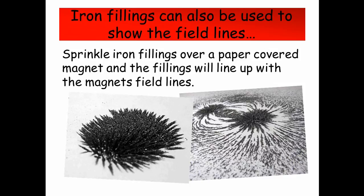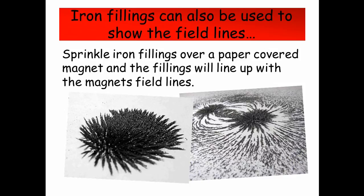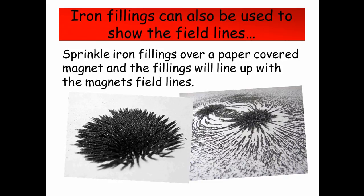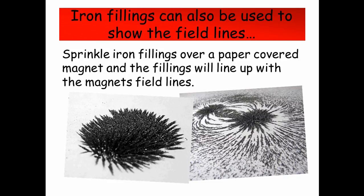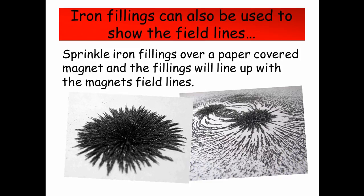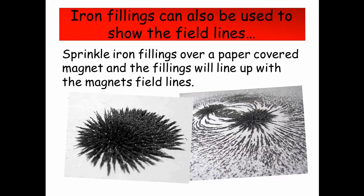Iron filings can also be used to show the field lines. Sprinkle iron filings over a paper-covered magnet and the filings will line up in the magnetic field lines. The only disadvantage to this is that you can't see the direction of the field that you can do with a compass, but it still looks pretty cool.